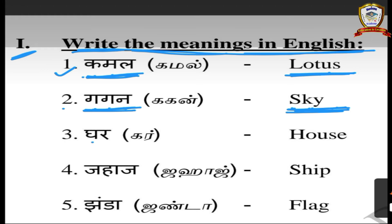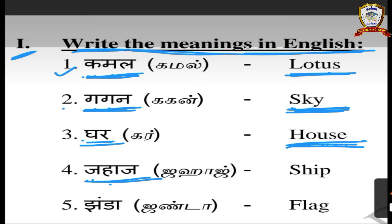Third one: Ghar — G-H-A-R. Ghar means house — H-O-U-S-E, house. Fourth one: Jahaj — J-A-H-A-J. Jahaj means ship — S-H-I-P, ship.